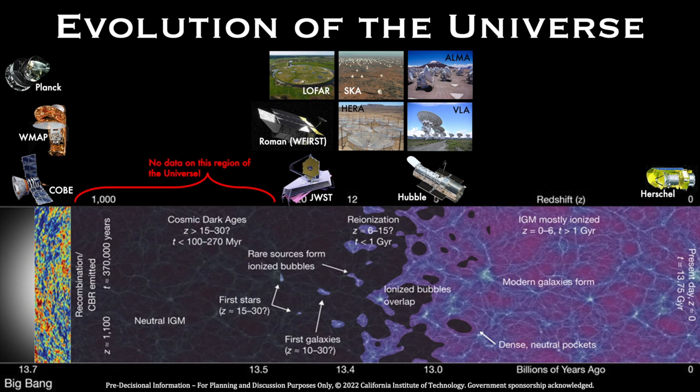The cosmic microwave background radiation is being studied by COBE, WMAP, and Planck. Hubble and James Webb Space Telescope are observing the early galaxies. Several ground-based observatories are also observing in this region. But currently, there is no data about the dark ages,